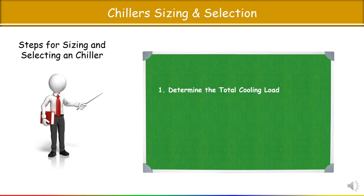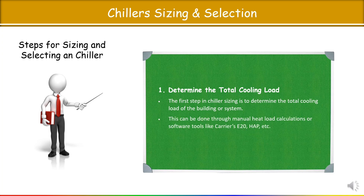The first step in chiller sizing is to determine the total cooling load of the building or system. This can be done through manual heat load calculation or software tools like Carrier E20, HAP software, etc.